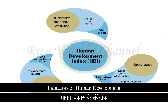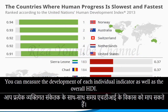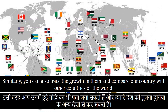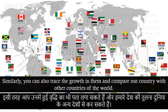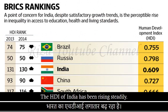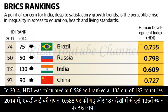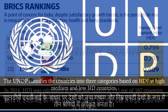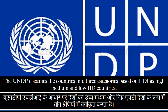Indicators of human development. You can measure the development of each individual indicator as well as the overall HDI. Similarly, you can also trace the growth in them and compare our country with other countries of the world. The HDI of India has been rising steadily. In 2014, HDI was calculated at 0.586 and ranked at 135 out of 187 countries. The UNDP classifies the countries into three categories based on HDI as high, medium and low Human Development countries.